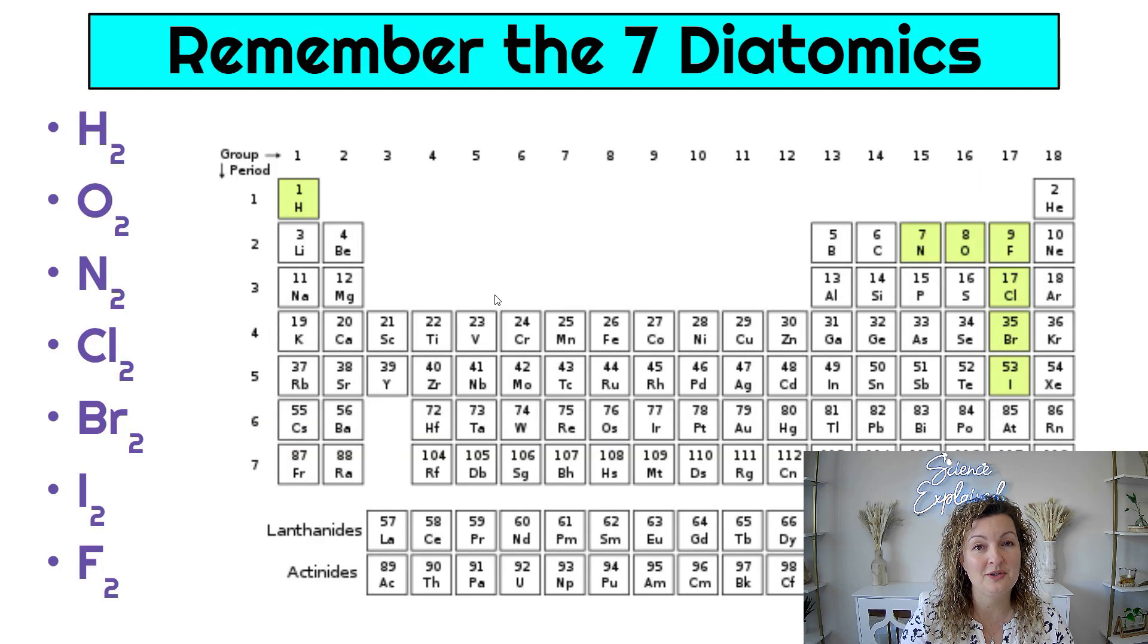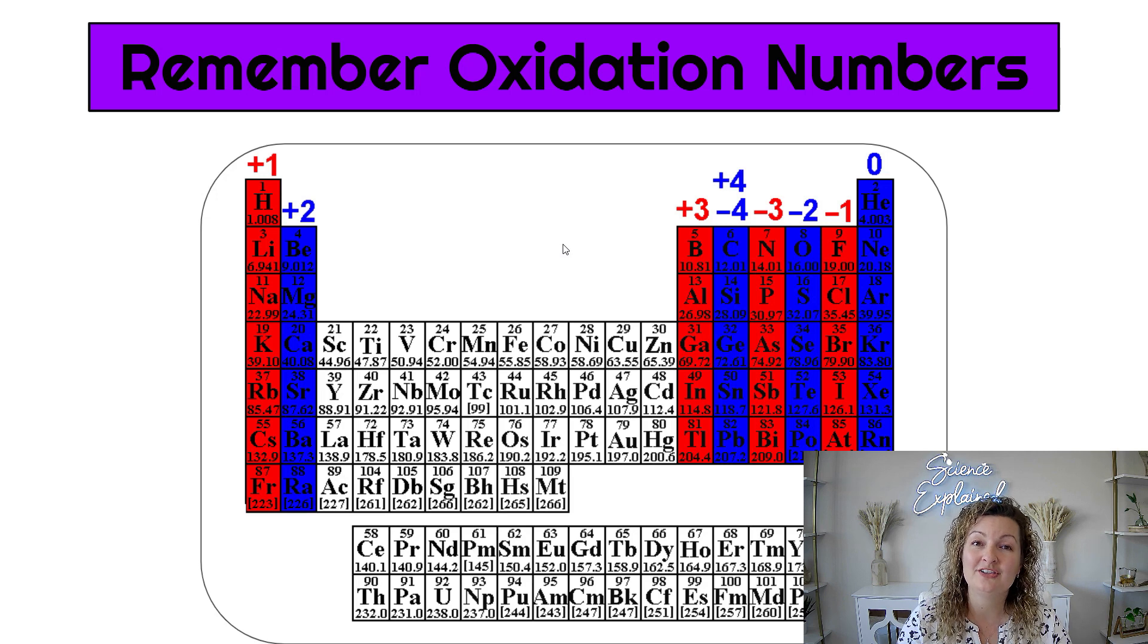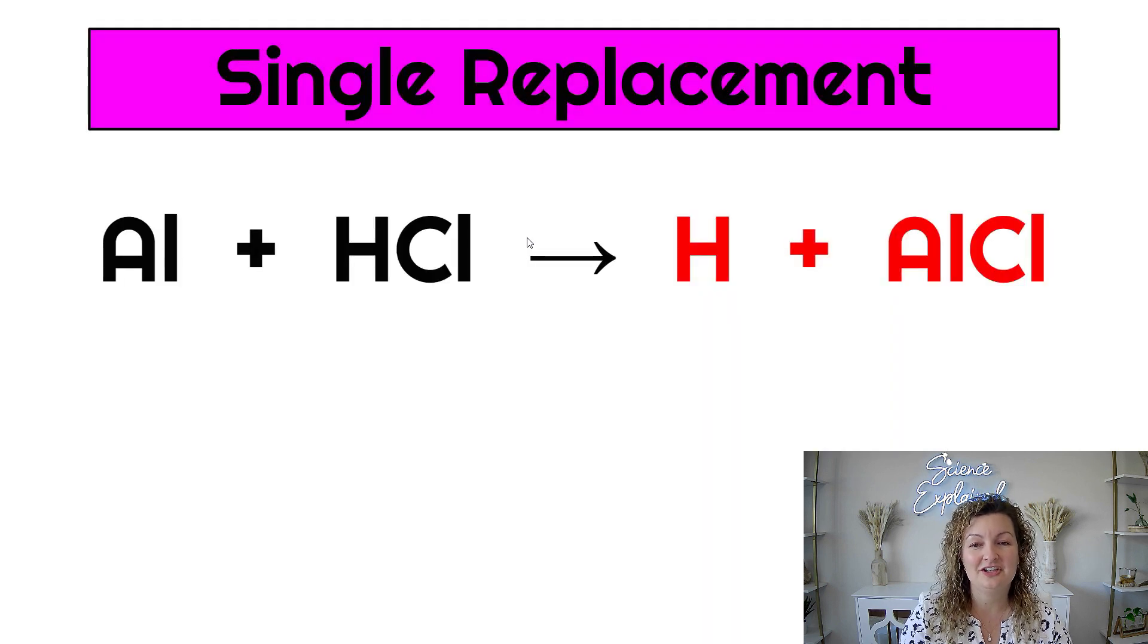So step two, we need to remember a couple of things. First, do you all remember the seven diatomics? These are the ones that occur in nature as a pair. I listed them here. They make a seven on the periodic table and hydrogen is also there. Don't forget about it. And then we need to remember our oxidation numbers. So we have positive one, positive two, positive three, plus or minus four, negative three, negative two, negative one and zero for our noble gases. Once we can remember these things, the rest is cinch. Let's continue on.